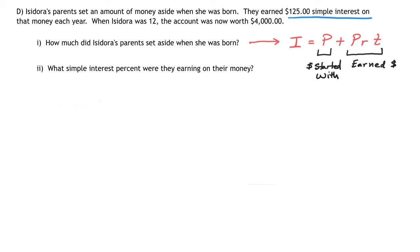We need to figure out this part first. She earns $125 each year for 12 years, so we take the amount earned times 12. 125 times 12 equals $1,500. Plus what she started with, that total investment is $4,000 from the word problem.